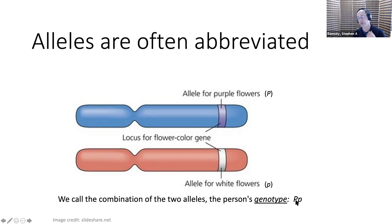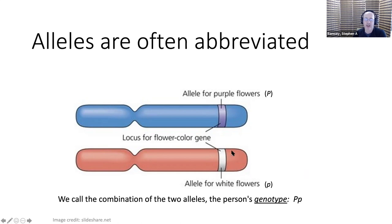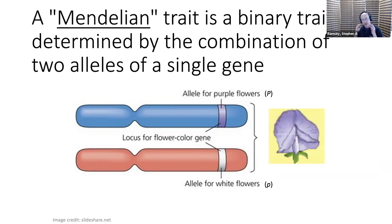It's customary to put the dominant allele first, and the key point is that the order of the alleles doesn't matter — the genotype is order independent. Now we have all the information to formulate a more modern definition of a classical Mendelian trait: it is a trait that is binary, and the phenotype is determined by the combination of two alleles for a single gene. Almost every word of that definition matters.